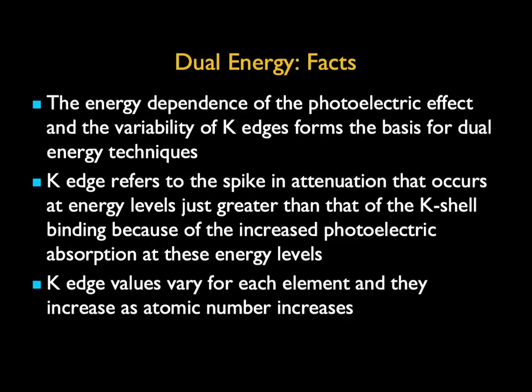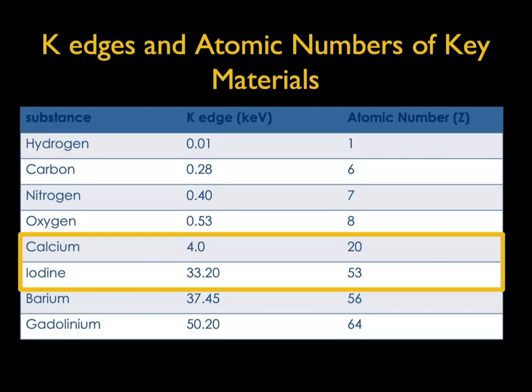Bone removal is critical, and while we've developed bone removal algorithms in the past, dual energy is ideal. The K-edge is most critical — referring to the spike in attenuation that occurs at energy levels just greater than that of the K-shell binding, because of increased photoelectric absorption at those energy levels. K-edge levels vary for each element and increase as the atomic number decreases — for example, calcium versus iodine, which is critical if you want to see the vessels but not the bone.